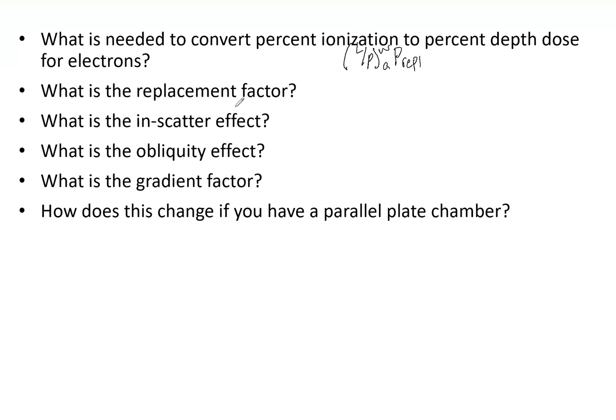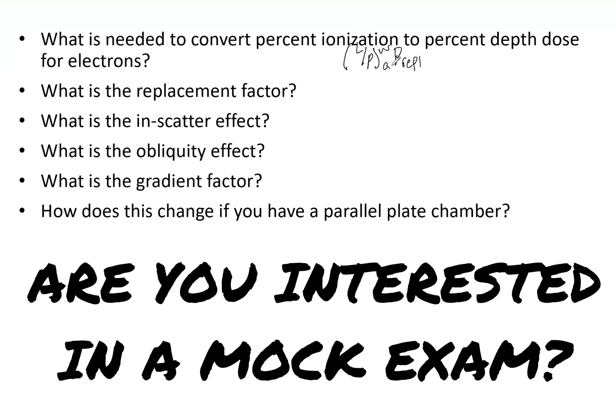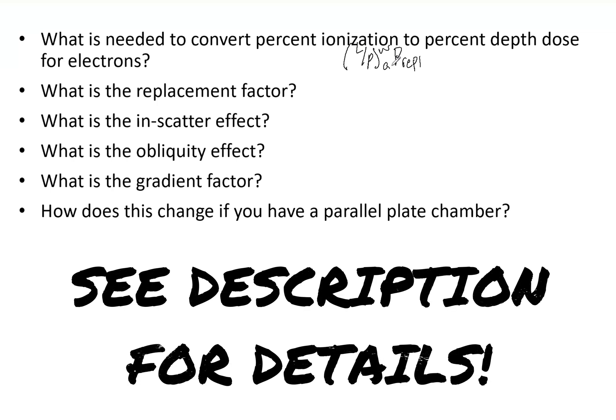You would find your percent ionization number, multiply it by these two, and that is how you would get percent depth dose. Also remember that clinically, normally there is very little difference, so percent ionization for the most part we can assume is percent depth dose.